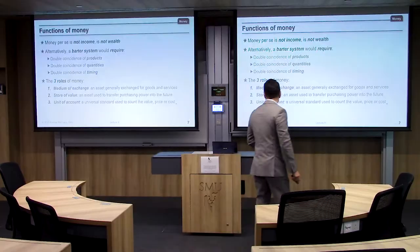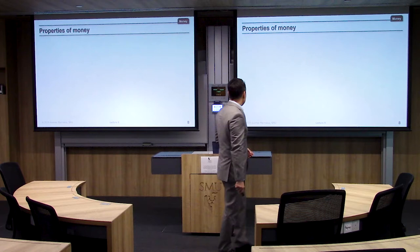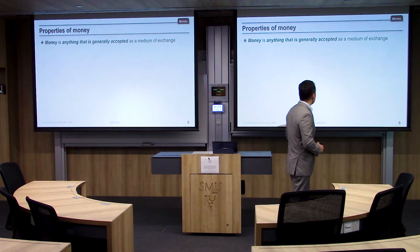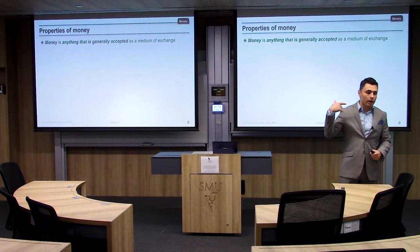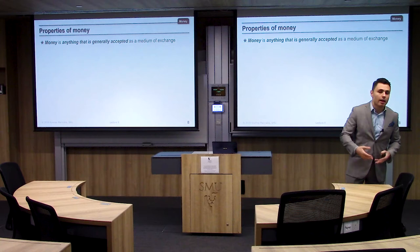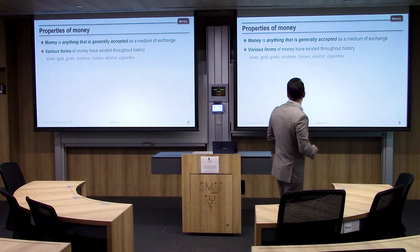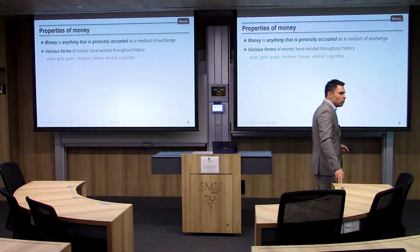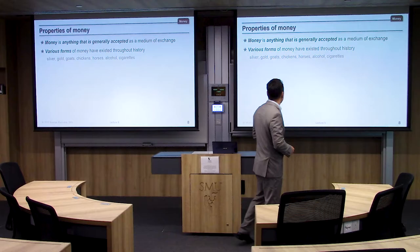Money has some very important properties. Anything generally accepted as a medium of exchange can be money — not only dollars, rubles, or euros. There are various forms of money throughout history and even today: silver, gold, and in older times goats, chickens, horses, or cigarettes.